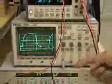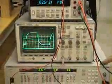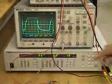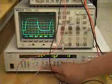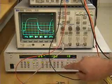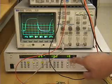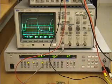This function generator creates a variety of different waveforms. In this case, we have it set up to create a square wave at 25 hertz frequency at 10 volts peak-to-peak amplitude.